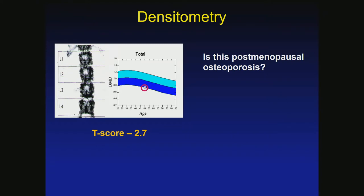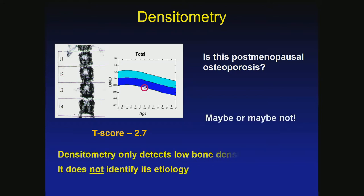We get a bone density and a T-score. Here's her T-score: minus 2.7. The question is, is this postmenopausal osteoporosis? Maybe — but it's possible she has a secondary cause. The bone density only detects the low number. It is up to us to figure out the cause, because we would like to treat the underlying cause before we start additional drug therapy on top of that.